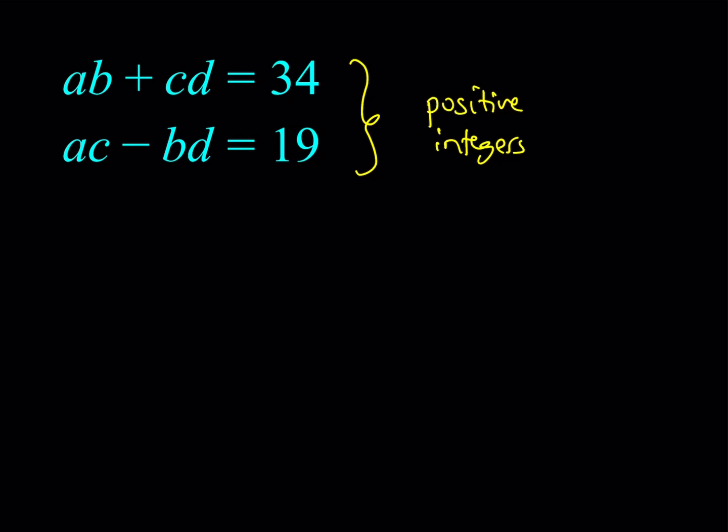Now, as it is, this equation is not impossible to solve. You can test different integers. For example, AB can be 20, CD can be 14, or AB can be 15 and CD could be 19. But you have to go through all these possibilities, so there must be an easier way to handle this. That's where the identity comes in.